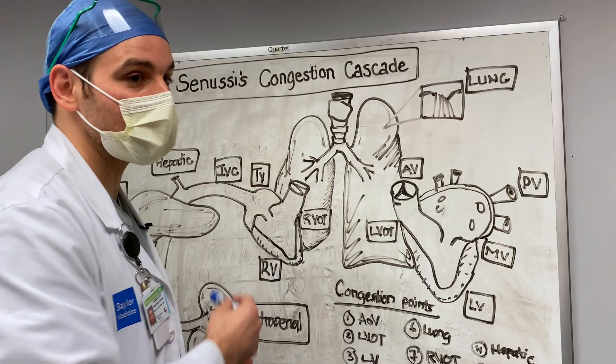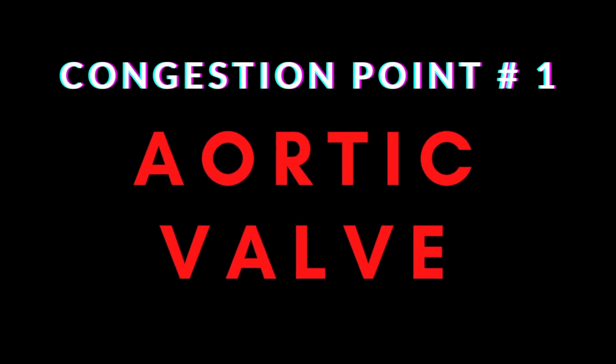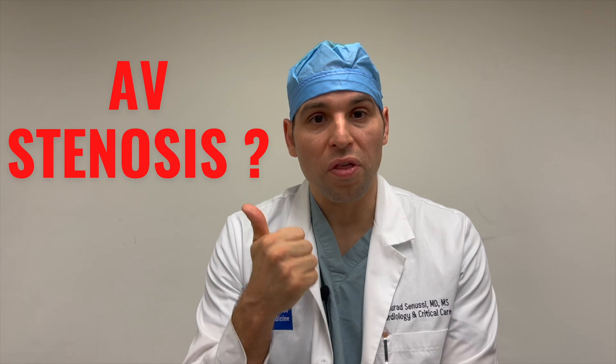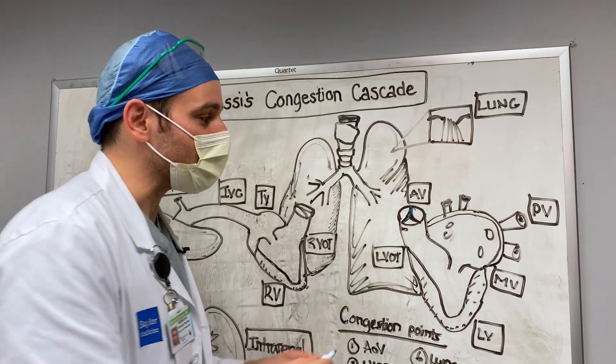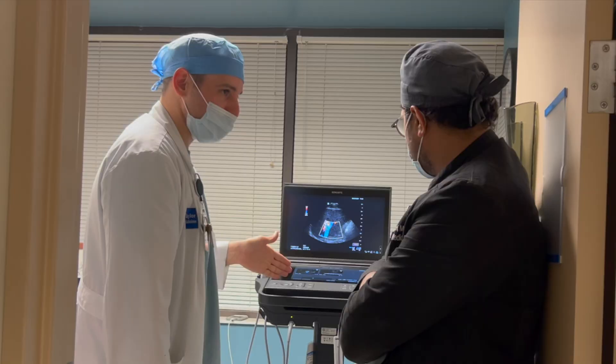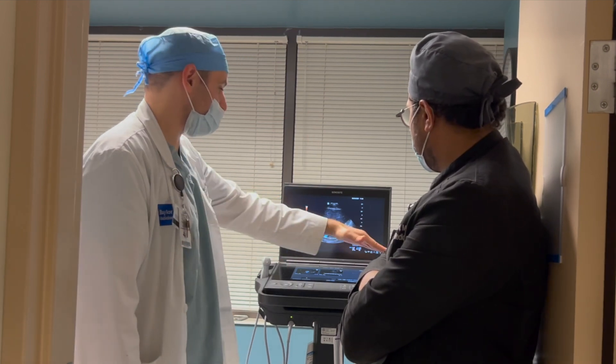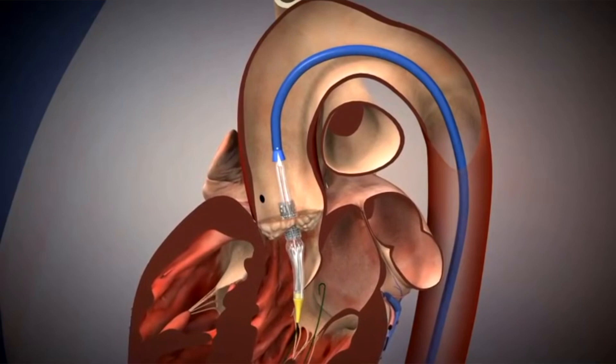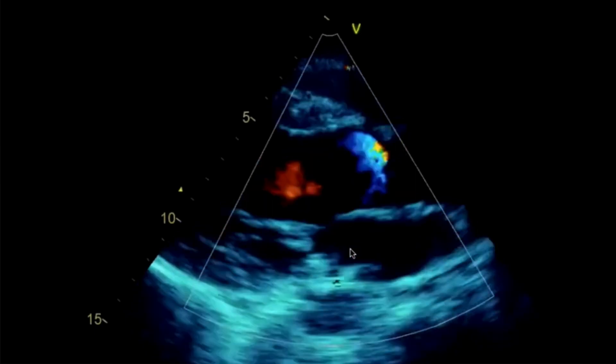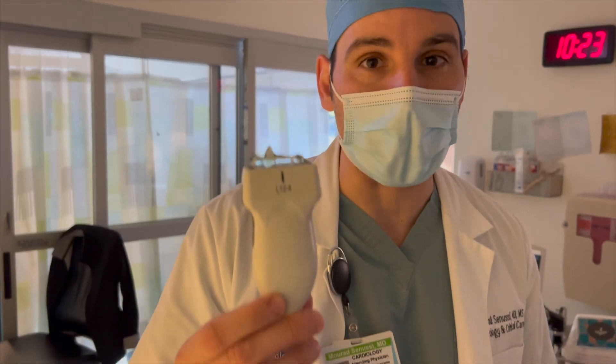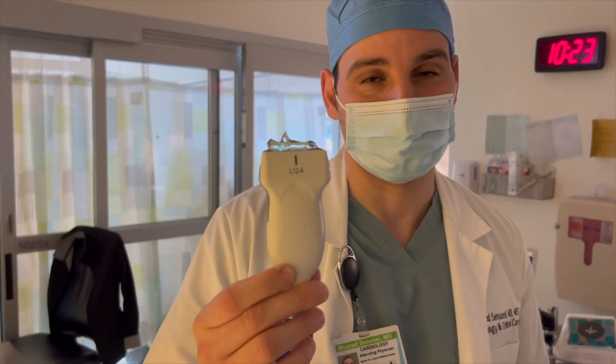When assessing a patient in undifferentiated shock or congestion of unknown origin, always start with the aortic valve. Is it stenosed? Does it look thickened? Are the valve leaflets not opening, with no forward flow or stroke volume? This may be the reason for shock and congestion. Therapeutics may involve percutaneous intervention or surgery. Severe aortic regurgitation causing hemodynamic compromise is a possible indication for surgical evaluation — all within the scope of point-of-care ultrasound, looking for pathologies that will alter management.